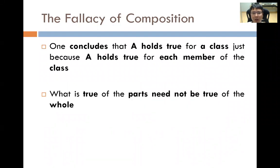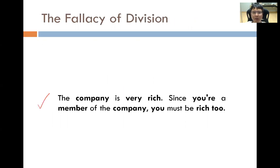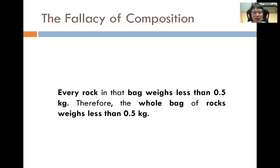The fallacy of composition: one concludes that A holds true for a class just because A holds true for each member of the class. What is true of the parts may not be true of the whole — this is the opposite of the fallacy of division. For example: every rock in the bag weighs less than 0.5 kg, therefore the whole bag of rocks must weigh less than 0.5 kg. Obviously we know this cannot be true.